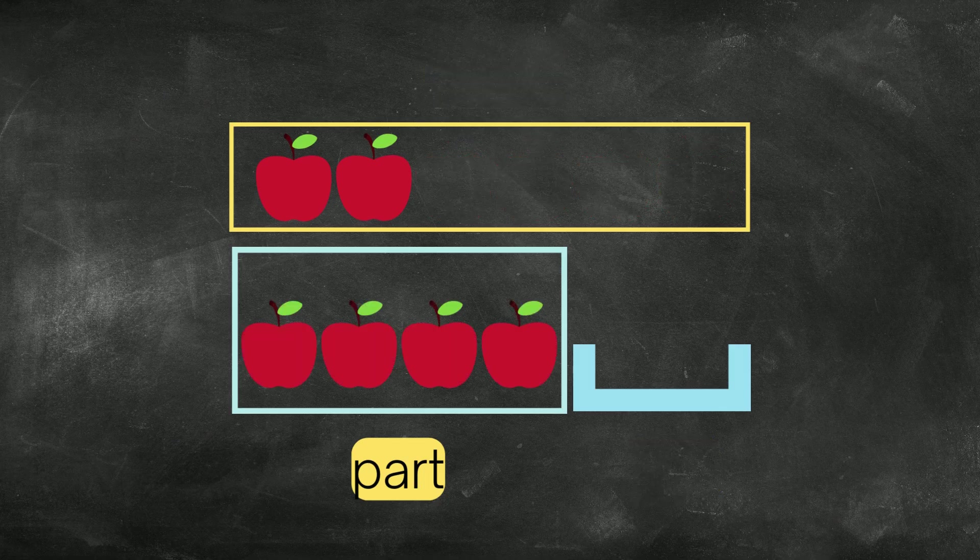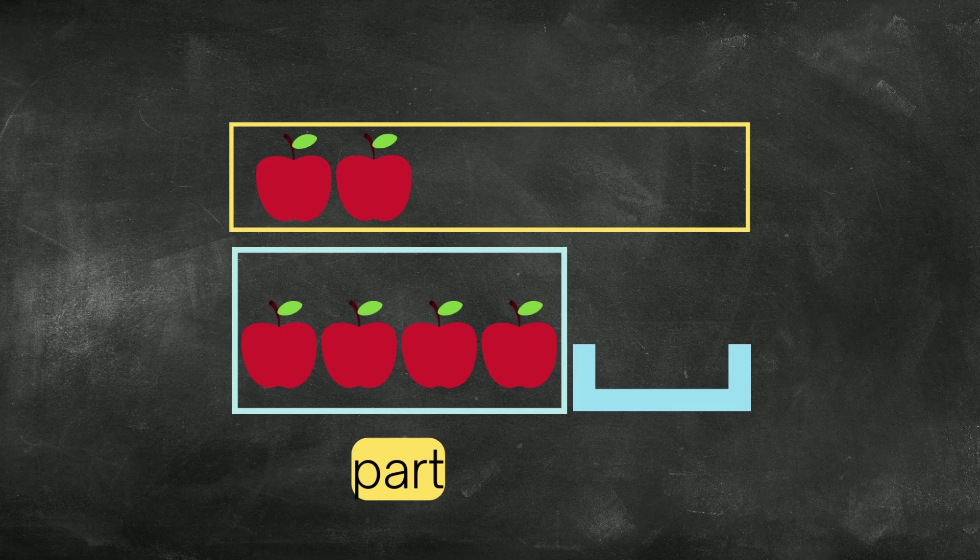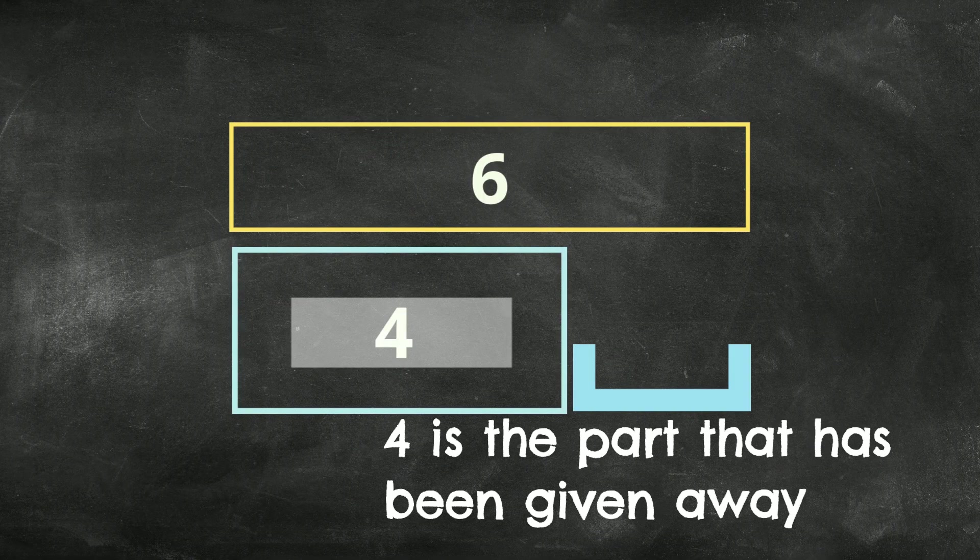That's a clue that now I know he's giving it away means he's taking it from the 6 and giving it away. That's minus, that's subtraction. So I'm going to put the number 4 inside the box with a part.